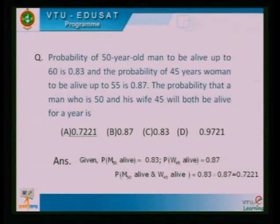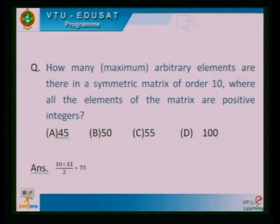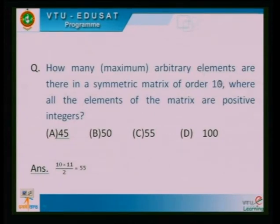Another probability problem: the probability of a 50-year-old man being alive up to 60 is 0.83, and the probability of a 45-year-old woman is 0.87. Since we need both to be alive, the solution is the product of both, giving the first option. Also, how many arbitrary elements are there in a symmetric matrix of order 10 where all elements are positive integers? Here n(n+1)/2 = 10×11/2 = 55. This is the solution.